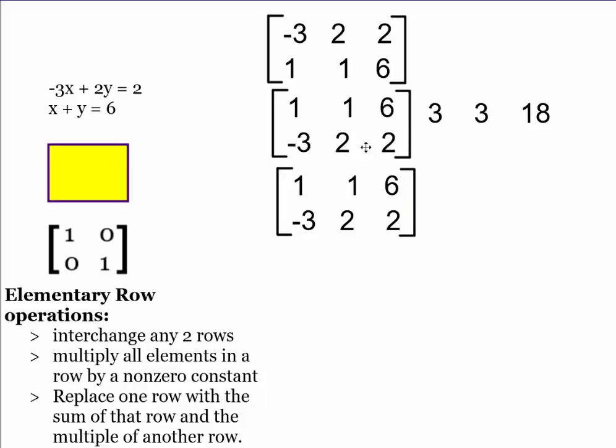So I've got 3 plus negative 3 is going to give me 0. I've got a 3 plus a 2, that's going to give me a 5. And I've got 2 plus 18, that's going to give me 20.